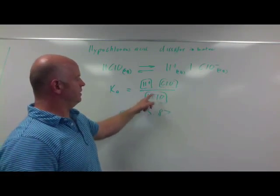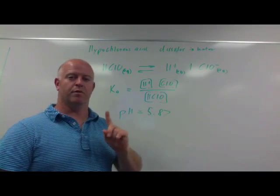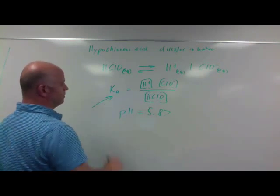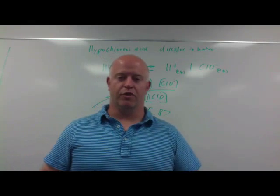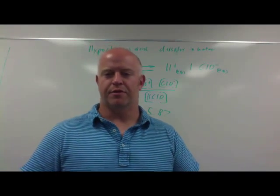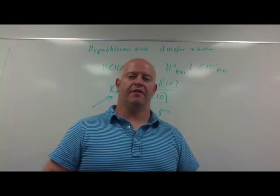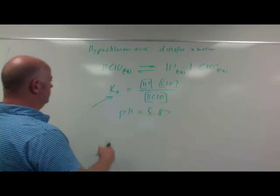To know the concentration of everything inside this equilibrium, I need one more piece of data - I need to know the Ka value. We can look that up. If we go to hypochlorous acid and look up its Ka value, it's actually 3.5 times 10 to the negative 8.